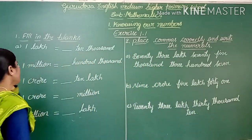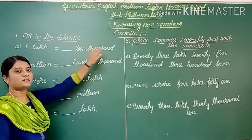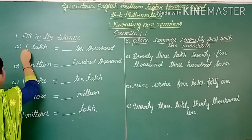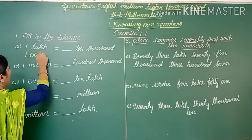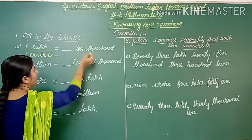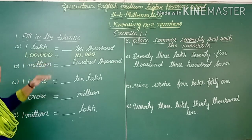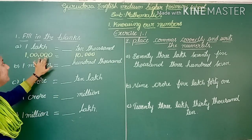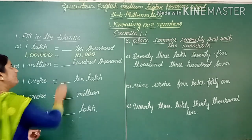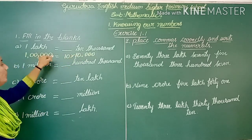Let's take the first example: 1 lakh is equal to blank 10 thousands. First, we write 1 lakh in numerals — 1,00,000. We need to balance the zeros. In 10,000 there are 4 zeros, but 1 lakh has 5 zeros, so we need one more zero. We multiply by 10: 10 × 10,000 equals 1 lakh.